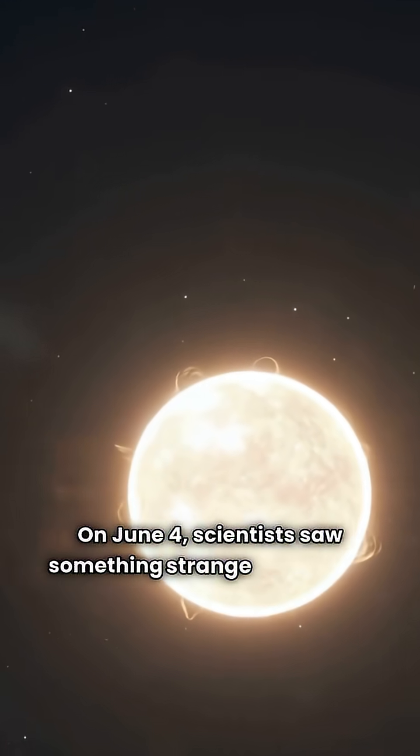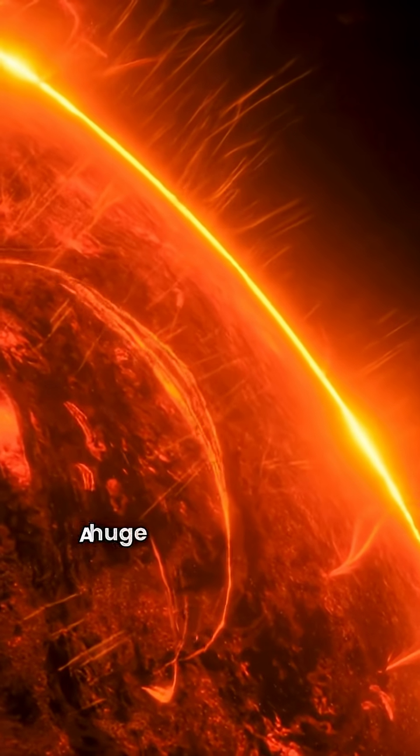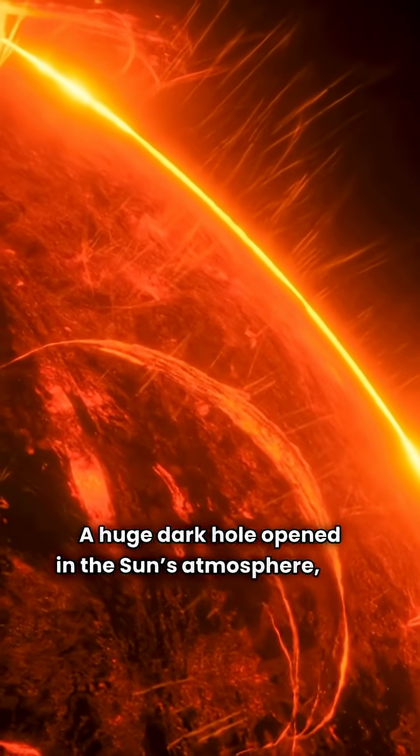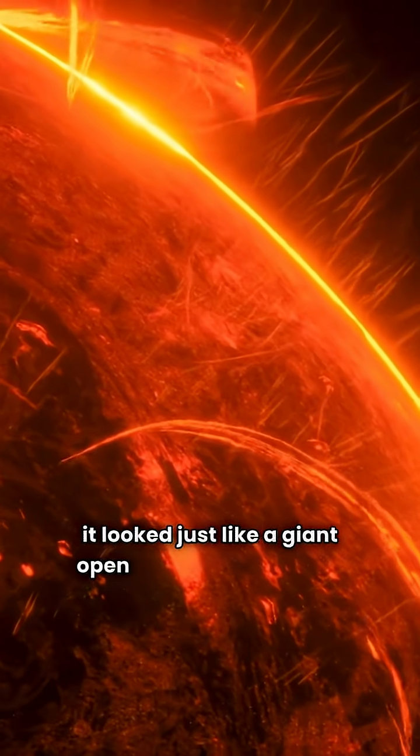On June 4th, scientists saw something strange on the Sun. A huge dark hole opened in the Sun's atmosphere, and it looked just like a giant open mouth facing Earth.